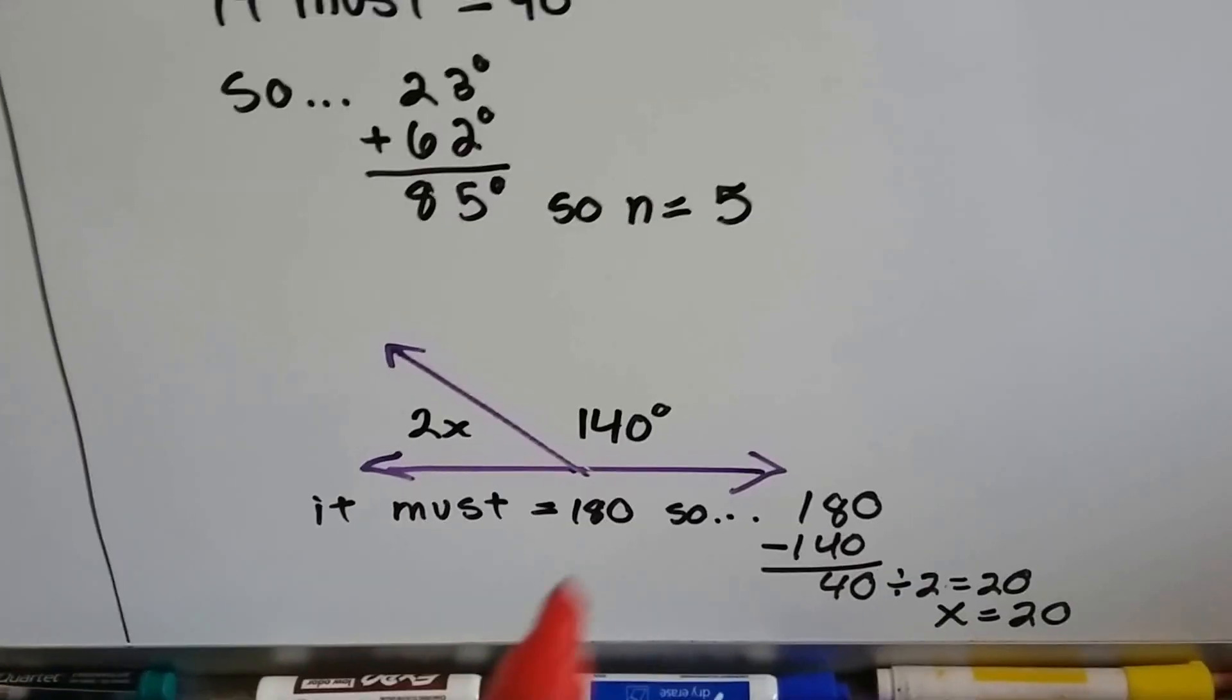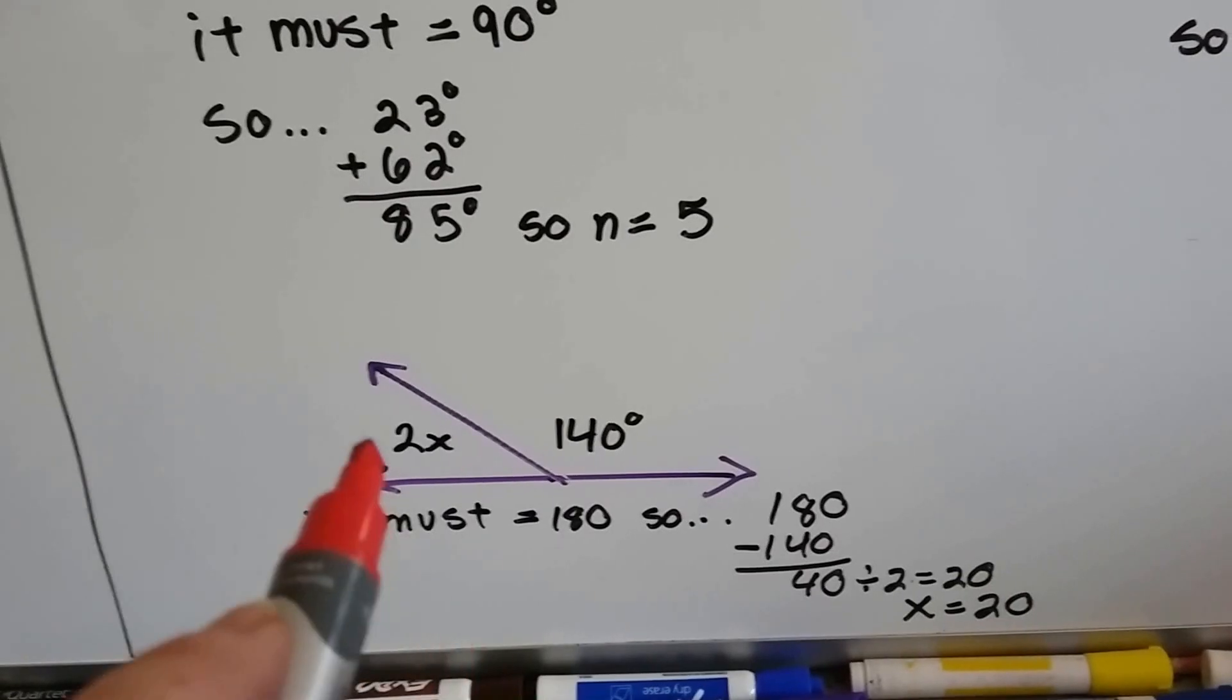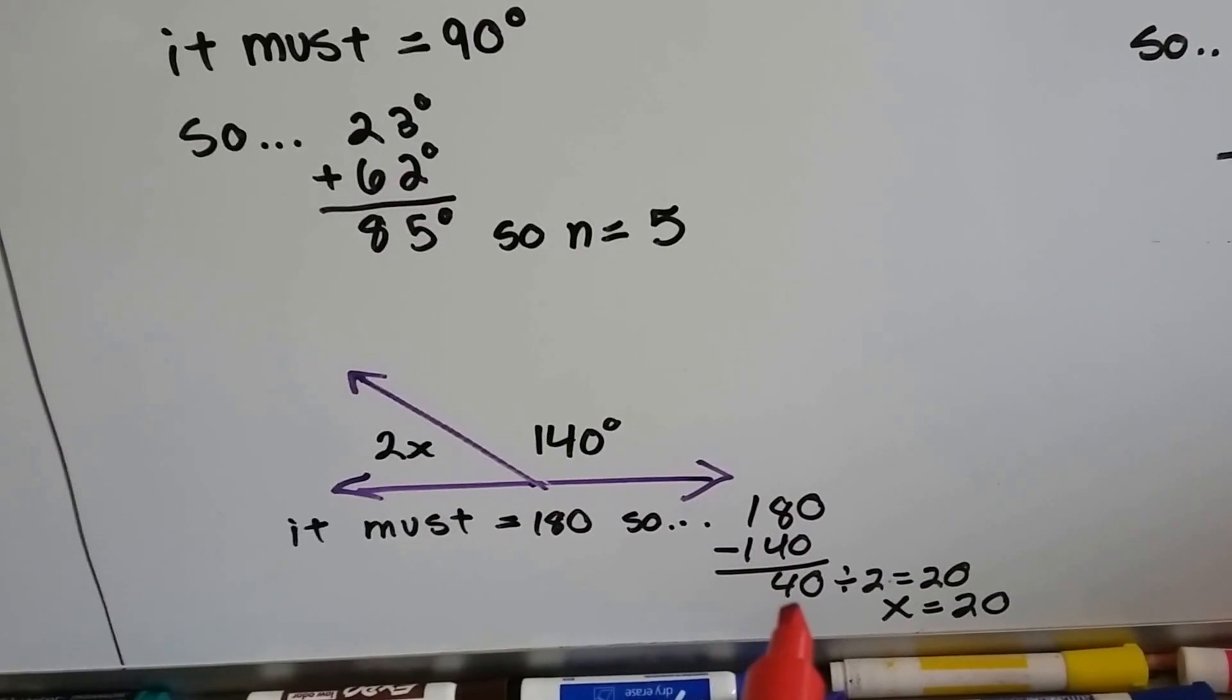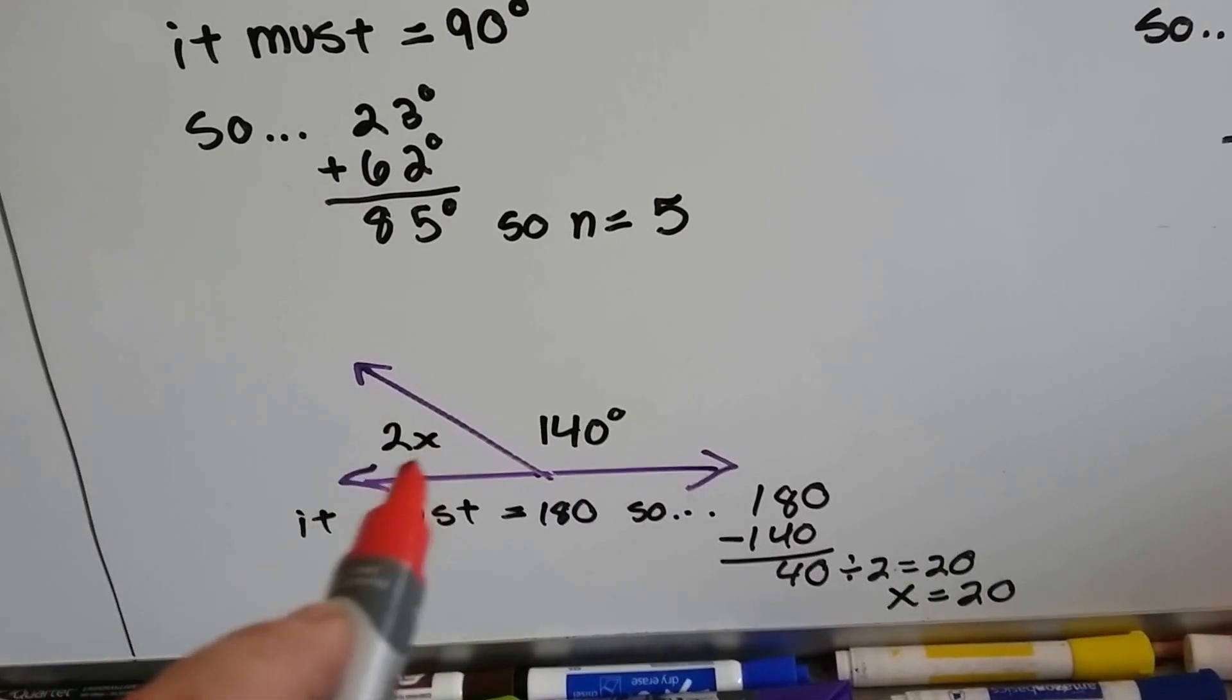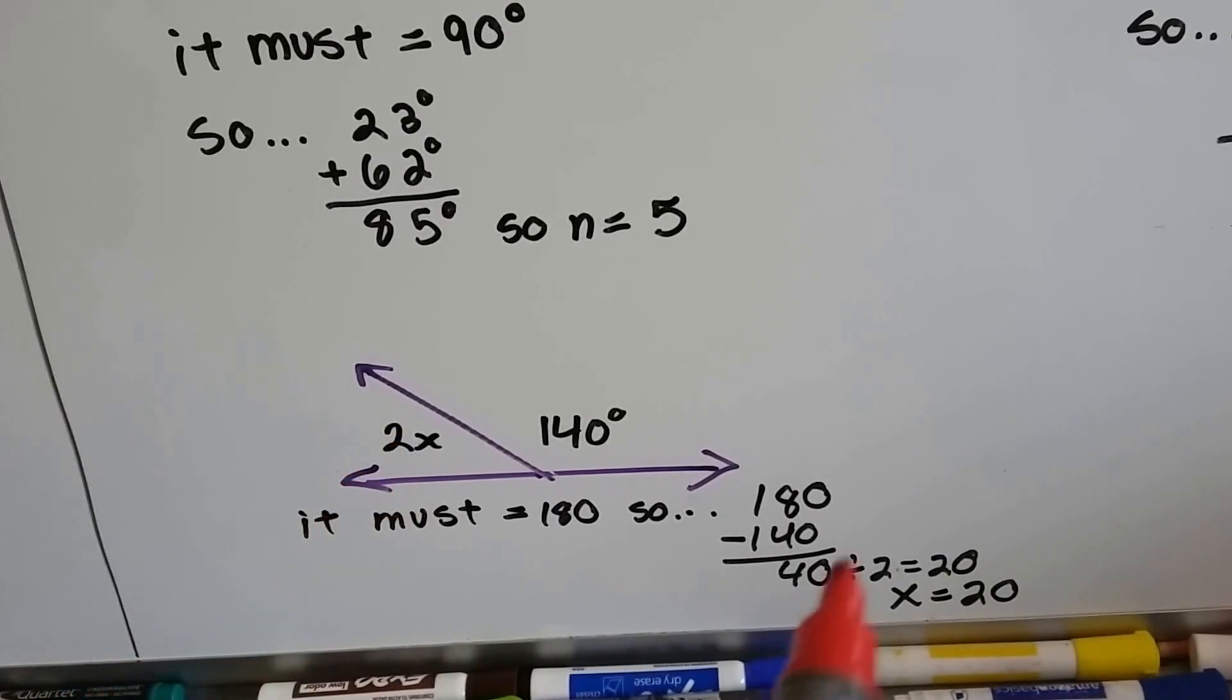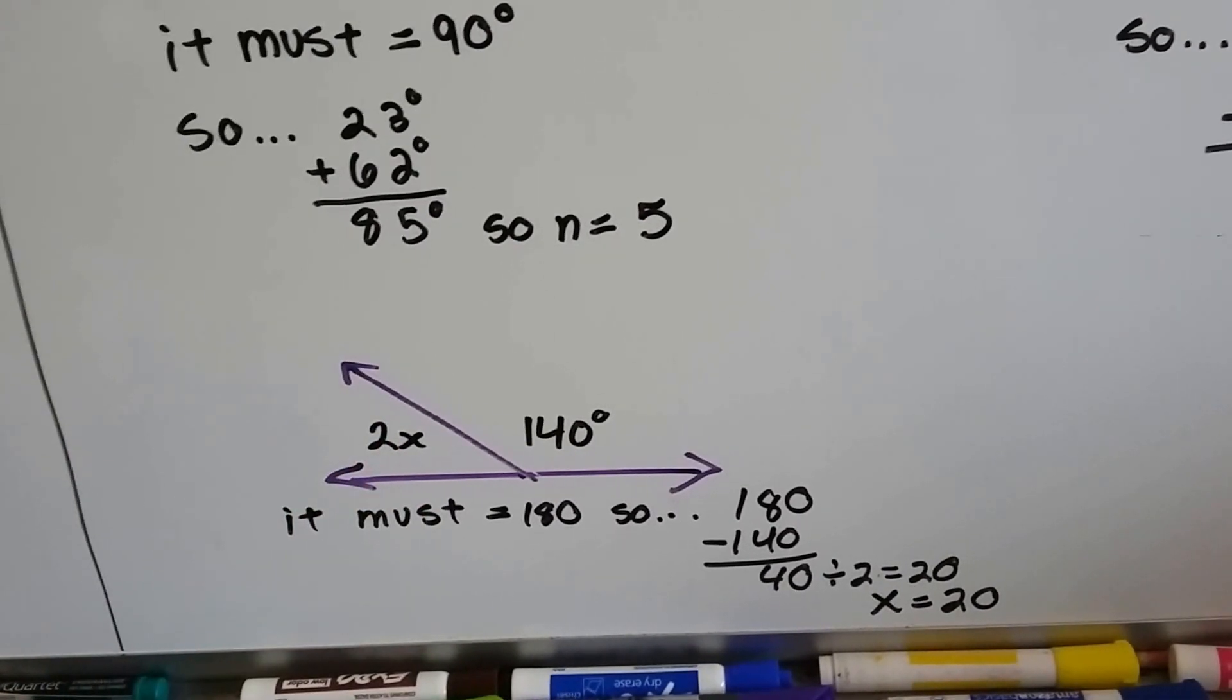Look at this one. It's a straight angle so we know it must be 180. And so it says this one right here is 140 and this one is 2x. Well, we take the 180 and we subtract the 140 and we're left with 40. So this is 40. So 2 times what is 40? We do 40 divided by 2 because it's the inverse operation of multiplication, which is what this is. And 40 divided by 2 is 20. So 2 times 20 is 40. So we know that x equals 20.